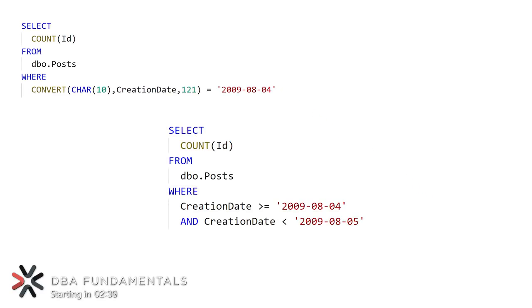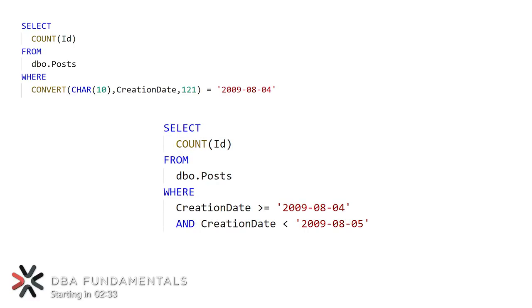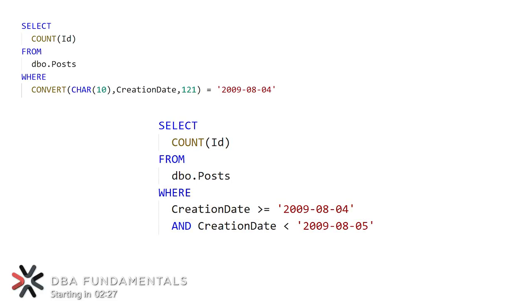We also have a second version of this query which gives us the same exact results, but our WHERE statement is a little different. In this example, we're trying to find all the rows after midnight on the 4th, but before midnight on the 5th.